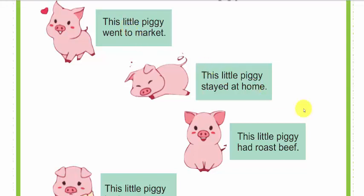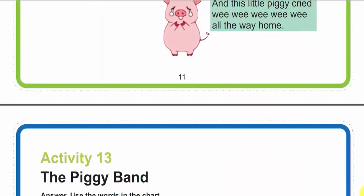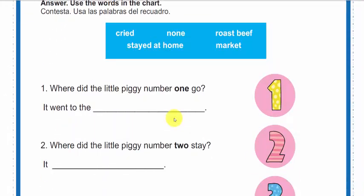This little piggy went to market. El puerquito fue al mercado. Entonces, el puerquito número uno: It went to the... ¿Con qué lo completamos aquí? Con market. Entonces su enunciado debería decir: It went to the market.